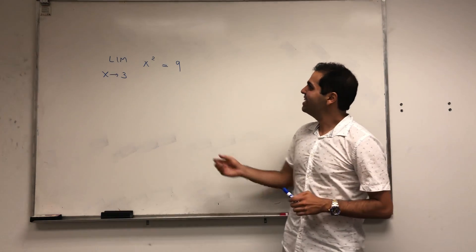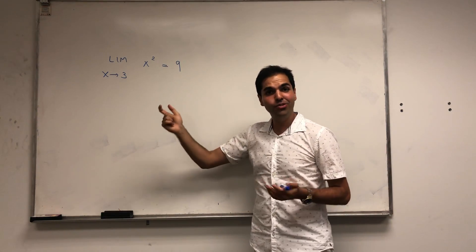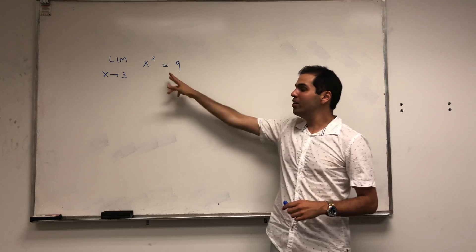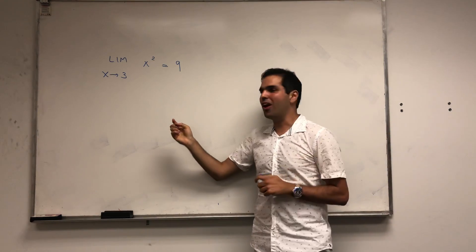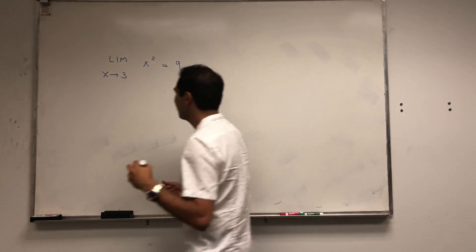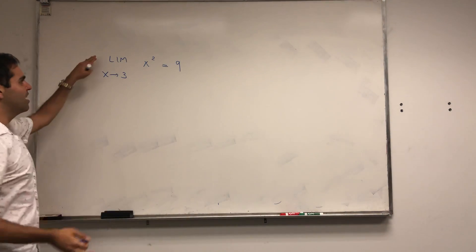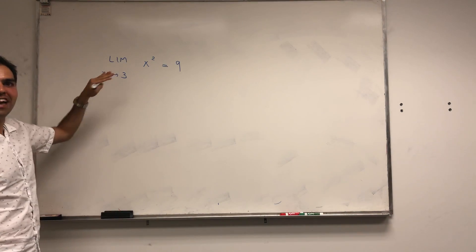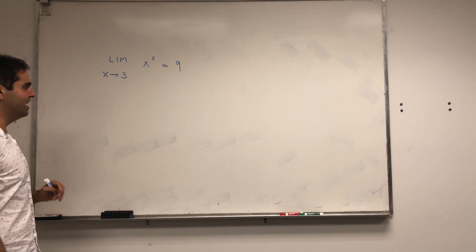All right, thanks for watching. Today we want to use epsilon and deltas to evaluate a slightly more complicated example compared to my previous video. We want to show that limit x goes to 3 of x squared equals 9.